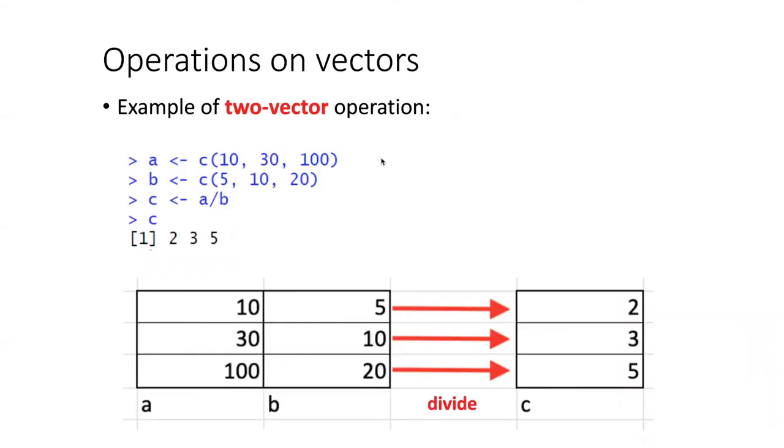If I want to perform an operation on two vectors, for example, here I create a vector with the numbers 10, 30, and 100, and a second vector with the numbers 5, 10, and 20. If I divide the first vector by the second vector, then the result is also going to be a vector because it's going to do pairwise division on each one, and here we can see this represented diagrammatically. So here's the first vector, and here is the second vector.